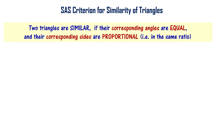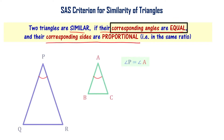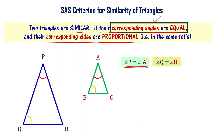Let us quickly verify this. Two triangles are similar if their corresponding angles are equal and the corresponding sides are proportional. We already have one angle equal. Now let's verify the other angles — let me take the measure of angle B and angle Q. Both are the same, so angle Q equals angle B.